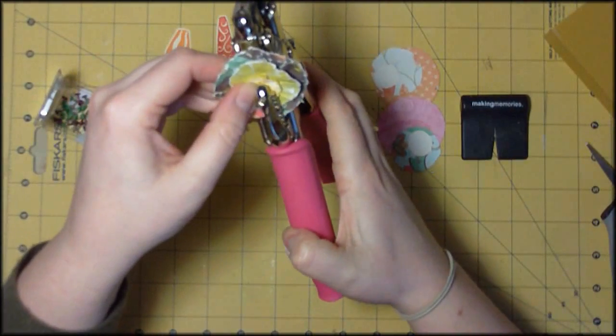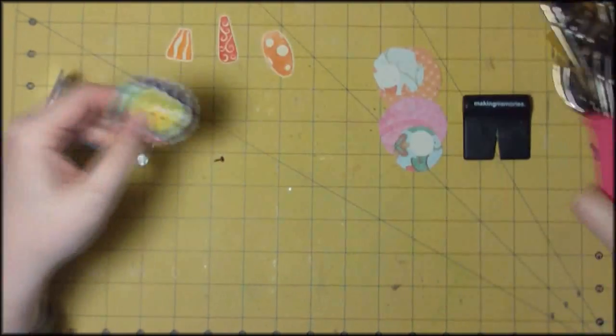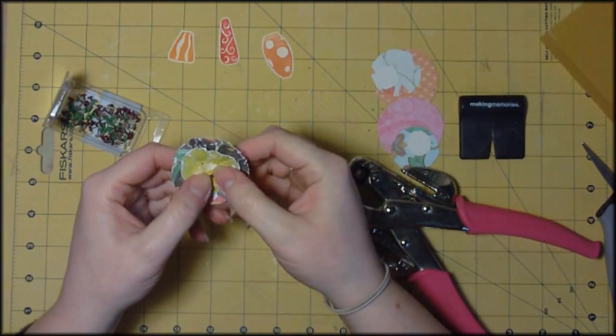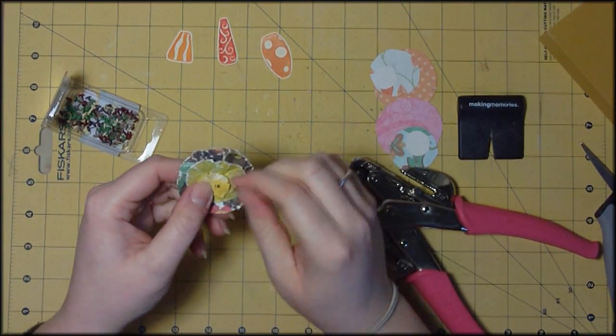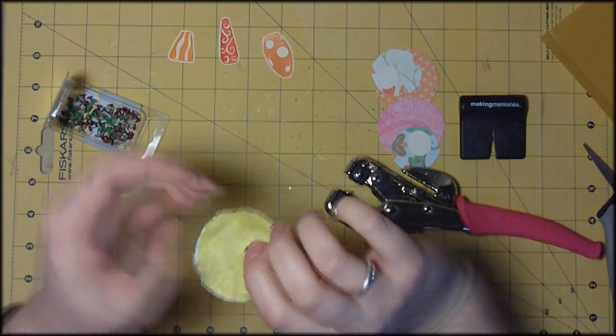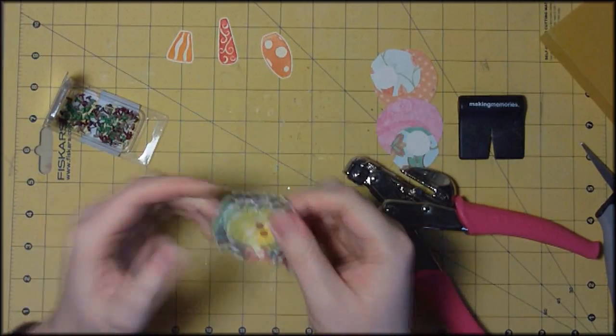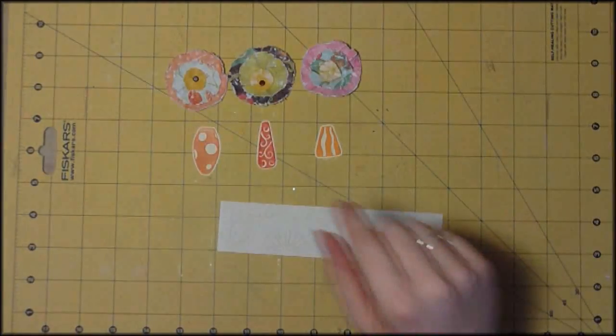And now what I'm going to do is just punch a hole through all three of those circles so I can adhere them together with a tiny brad. I think these are one-eighth inch brads from Dovecraft. And that's just to hold the flower together. But you could use a button or anything like that.